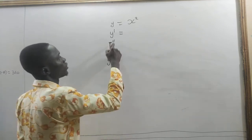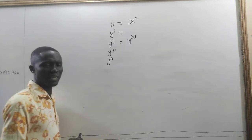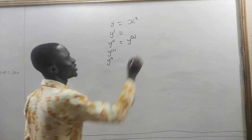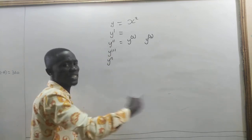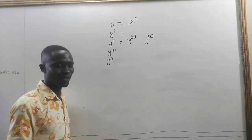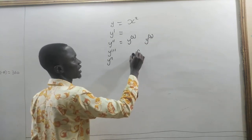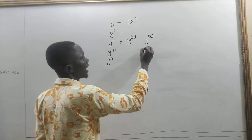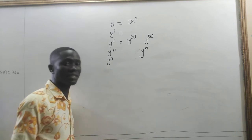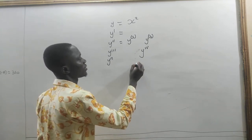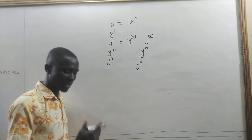We can also write y-prime-prime-prime as y to the power (3) — with the number in a bracket — meaning differentiate the function three times. We can also use Roman numerals as the exponent: y to the power iv — without a bracket — means differentiate it four times. If I write y to the power v, it means differentiate it five times.